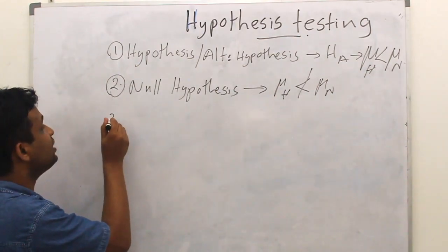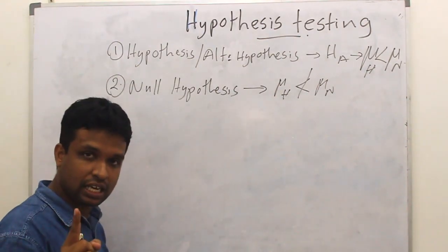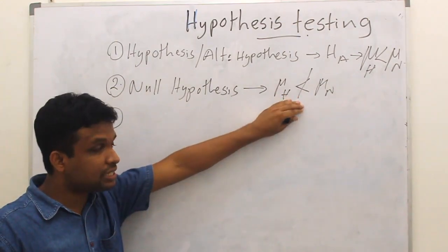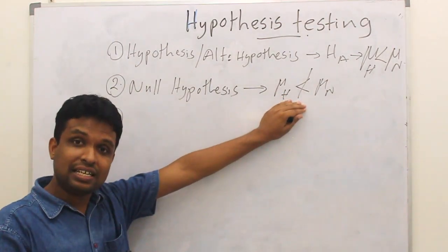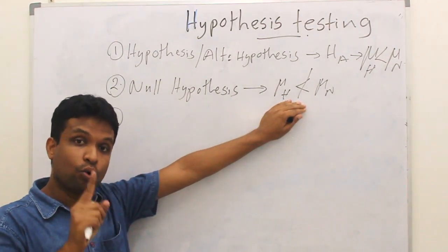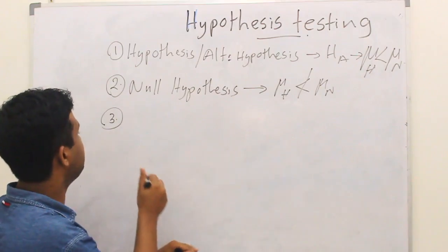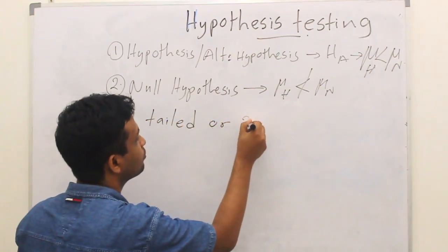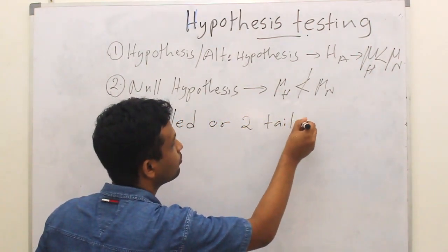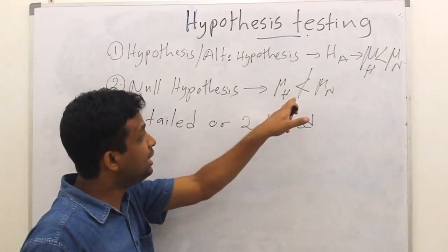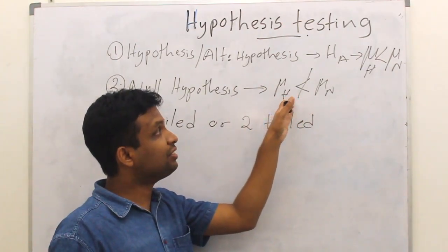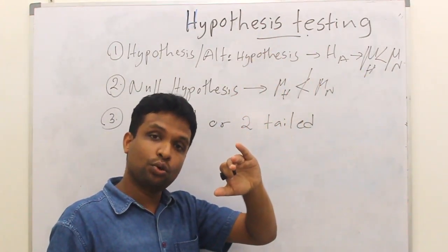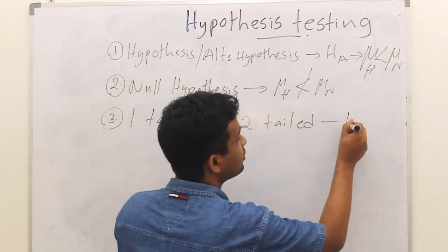The third step is you need to decide whether this test is a one-tail test or a two-tail test. Here, we are only interested in the lower side, so it is a one-tail test.